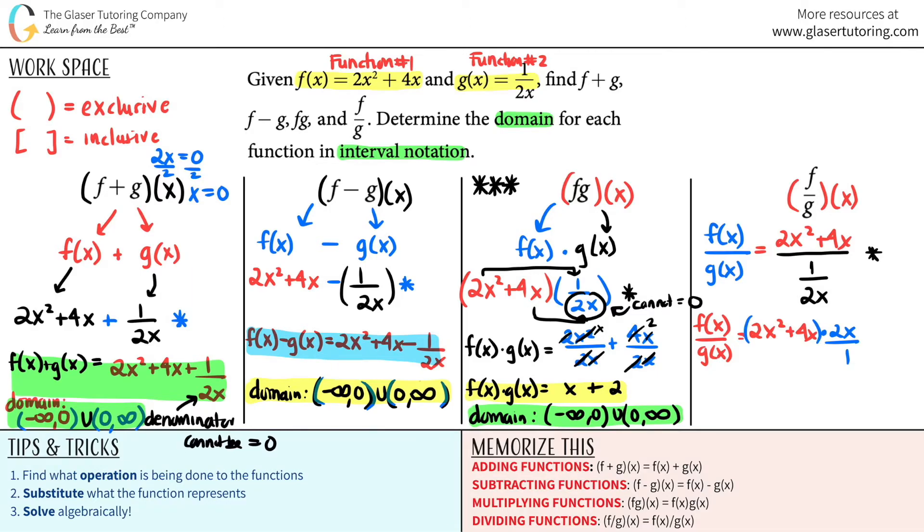This whole thing multiplied by 2x. So simplify, distribute, f of x over g of x equals 2x squared times 2x is 4x to the third plus 4x times 2x is 8x squared. If you wanted to simplify it further, I could pull out a 4 and I could pull out 2x values and then you would be left with x plus 2. That looks about good. So I'm just going to plug this whole thing in.